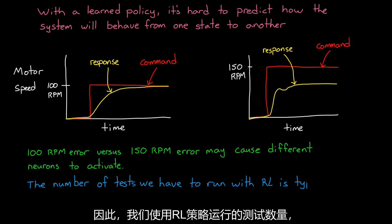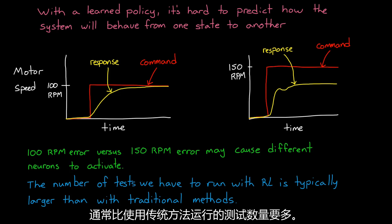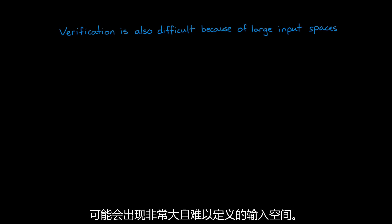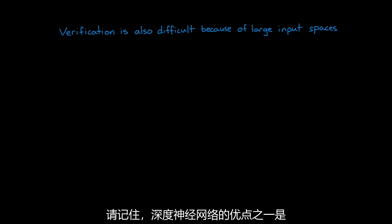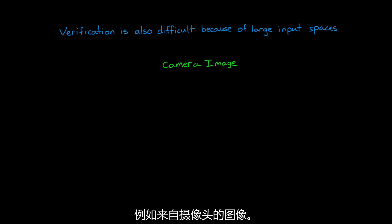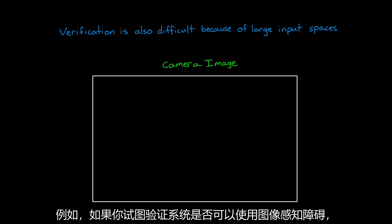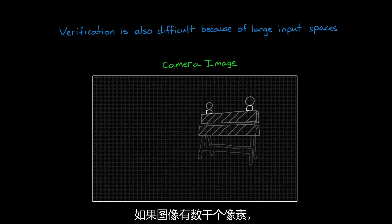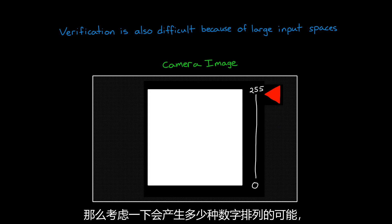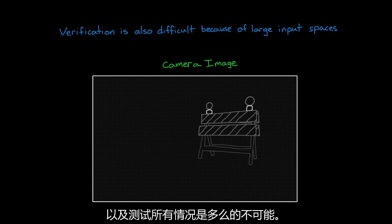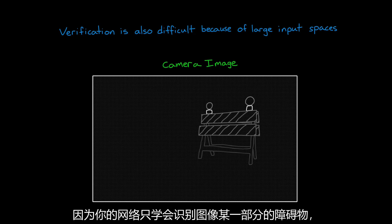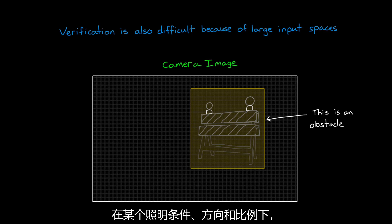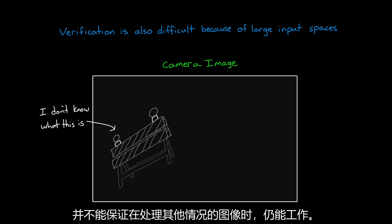A second reason verification through tests is difficult with neural network policies is because of the potential for extremely large and hard-to-define input spaces. One of the benefits of deep neural networks is that they can handle rich sensors like images from a camera. If you're trying to verify that your system can sense an obstacle with an image, think about how many different ways an obstacle can appear. If the image has thousands of pixels and each pixel can range from 0 to 255, think about how many permutations of numbers that works out to, and how impossible it would be to test them all. Just because your network has learned to recognize an obstacle in one portion of the image, at some lighting condition and orientation and at some scale, doesn't give you any guarantees that it works in any other configuration.